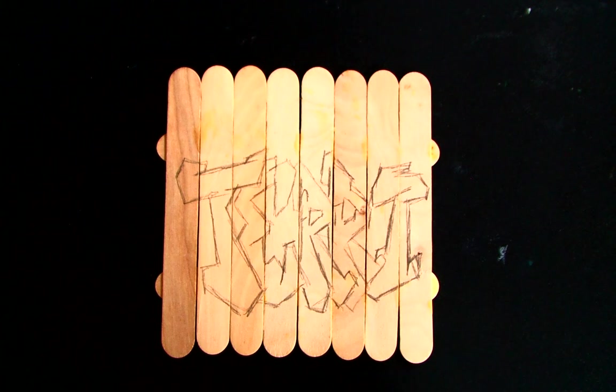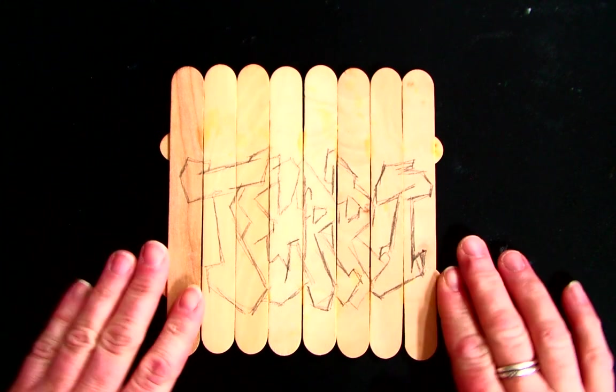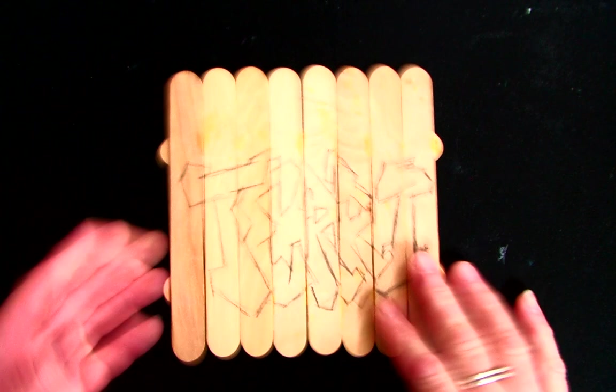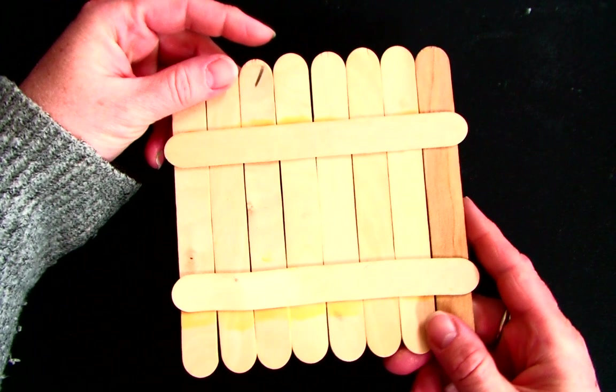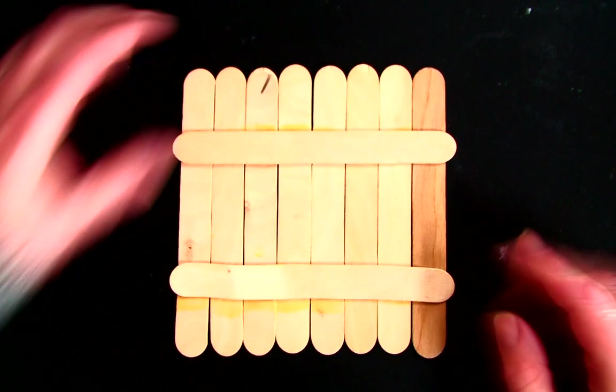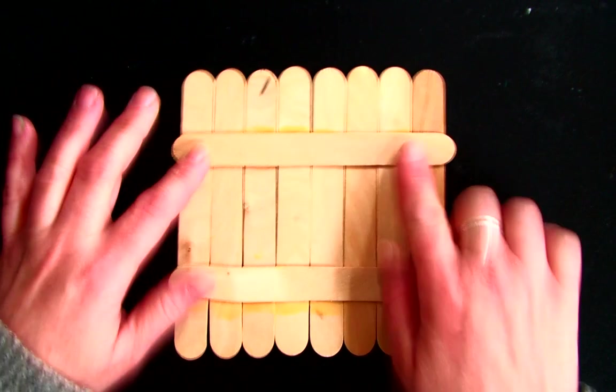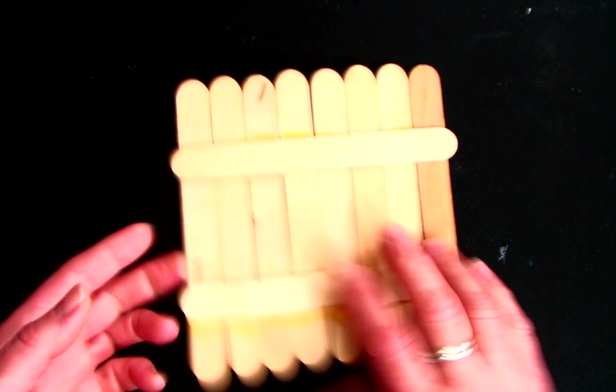We're going to begin our graffiti name fences. Basically, what I did was take some tongue depressors and glue them together. You just put them together, add glue to your two sticks, put them on the back, and then let those dry.